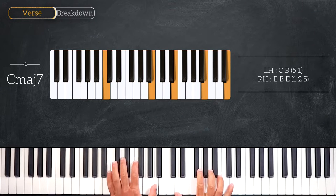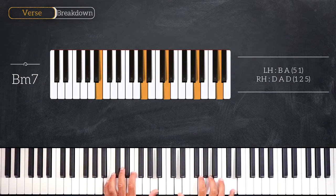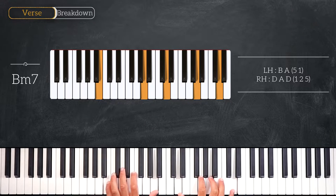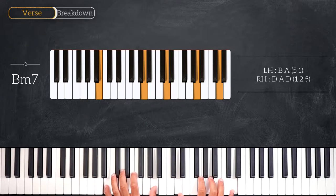The next chord we'll have is B minor 7. Playing B, A on the left and D, A, D on the right hand.